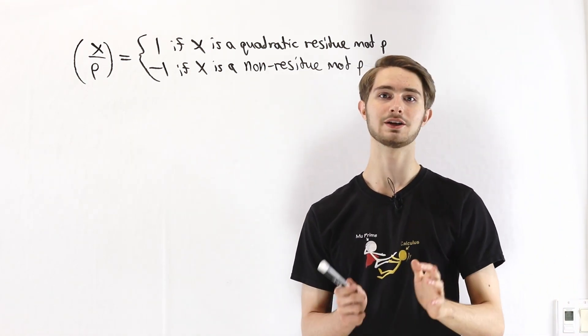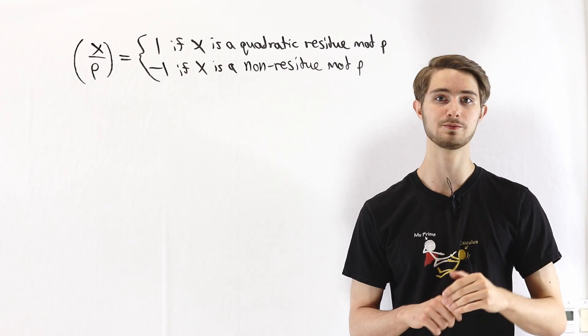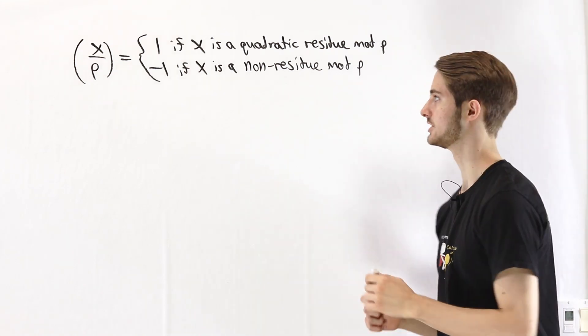This proof is going to use indices relative to primitive roots, so if you aren't familiar with that idea I've left a link in the description, you can check that out.